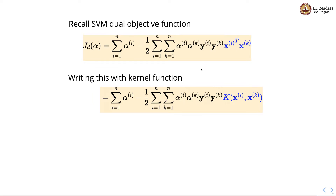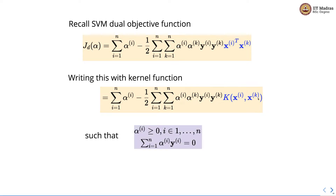In order to represent the SVM dual objective function in the form of a kernel function, we take the vector product xi transpose into xk — the product between the ith feature vector and the kth feature vector — and we replace that with the kernel function of xi and xk. The usual constraints are copied as they are in the SVM dual function.